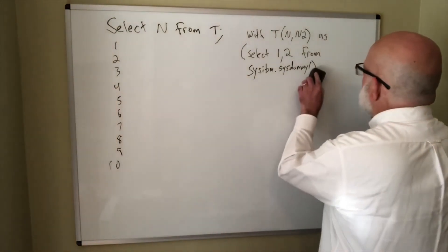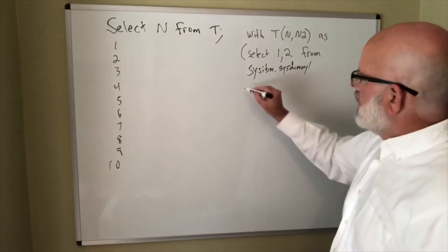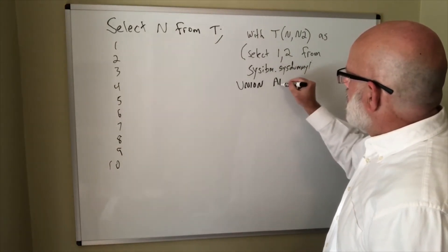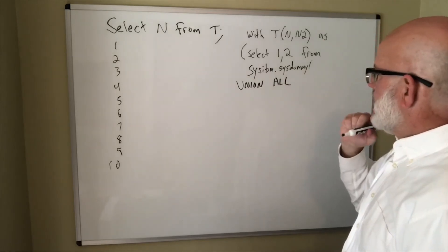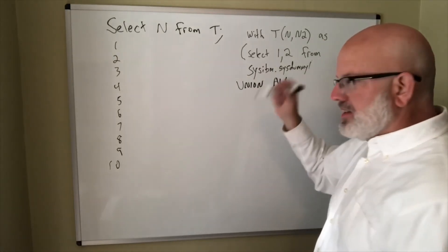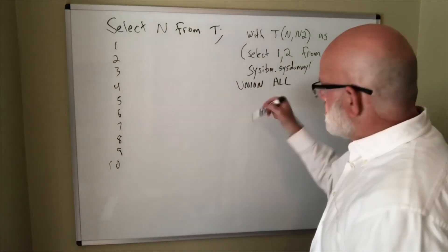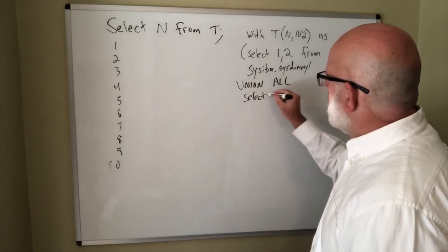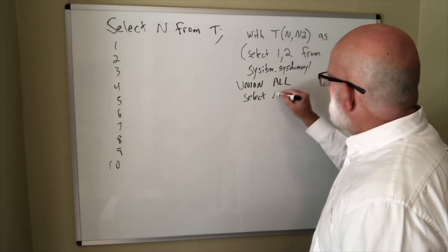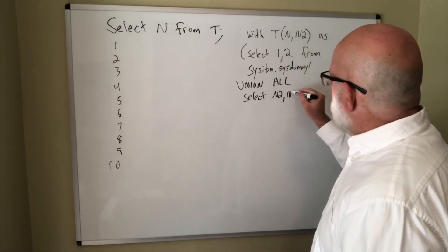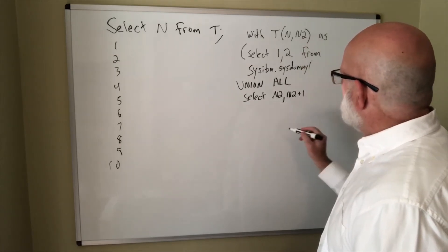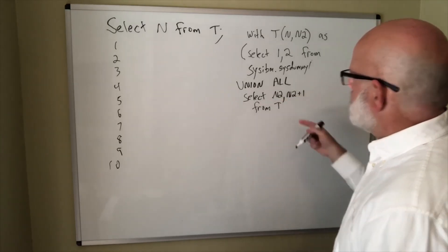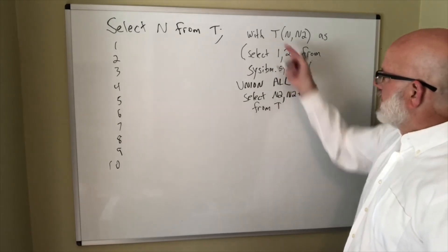So let's take this out. We're going to add a union. It has to be a union all when you're using recursion. And now for the second row and each subsequent row, it's going to be select the new value and then the new value incremented from t, from itself. That's what makes it recursive, is we're selecting from itself.